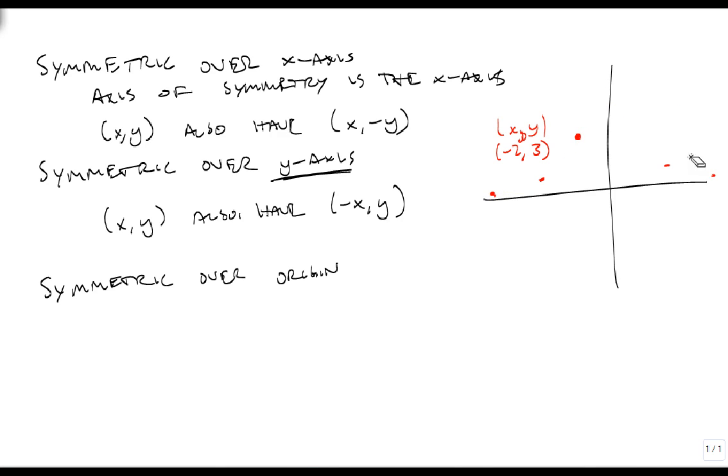The last one is symmetric over the origin. And I'm going to give you the algebraic definition. If every point (x, y) also has a point at (-x, -y), then it's symmetric over the origin. Notice that means it has to pass through the origin for this to be true.